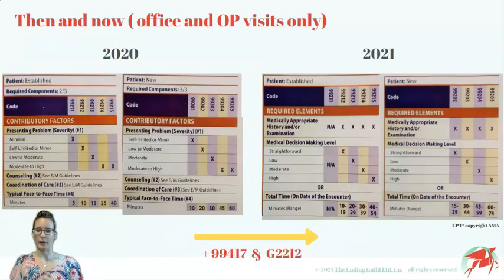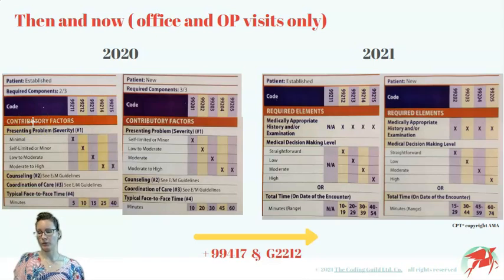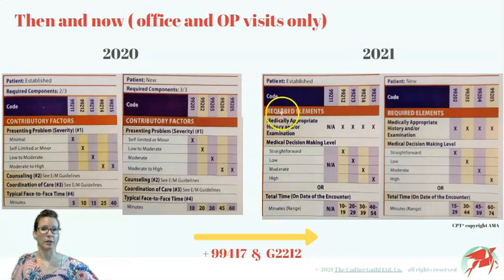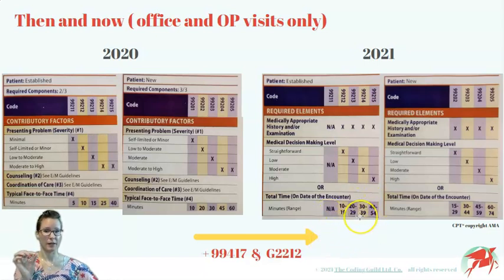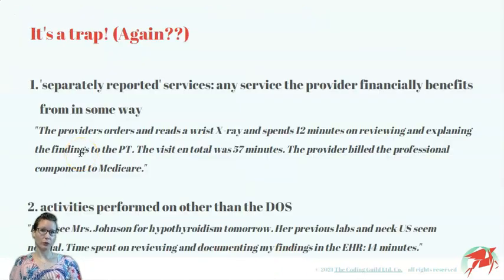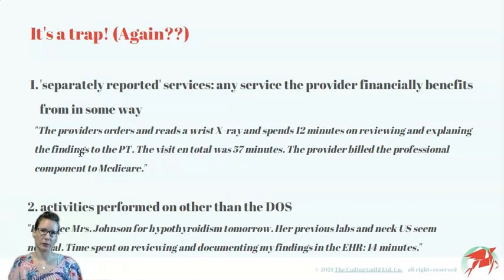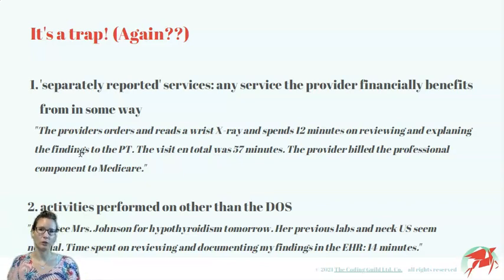In summary: in 2020, time was a contributory factor and could be used on its own only if more than 50% of the visit was dedicated to counseling or coordination of care. Now time itself can determine the level of service — it has become a required element. Back in 2020 we only had average minutes with rules and midpoints, but in 2021 we have well-defined exact ranges. Additionally, we have 2 new codes for prolonged services: 99417 and G2212. The main pitfalls to look out for when leveling based on time: beware of separately reported services, because the provider cannot get paid twice for the same service. Also make sure you are only counting time for care activities performed on the same date of service when the office visit or other outpatient service took place. Past achievements and the promises of the future are not covered by these new guidelines.